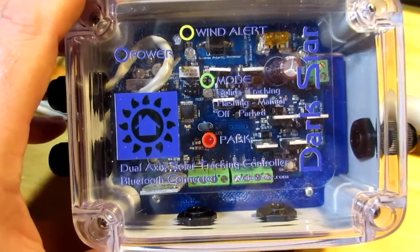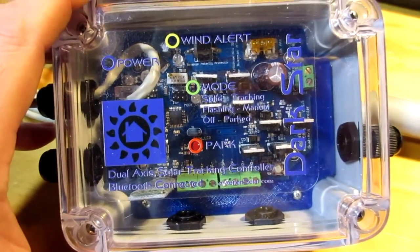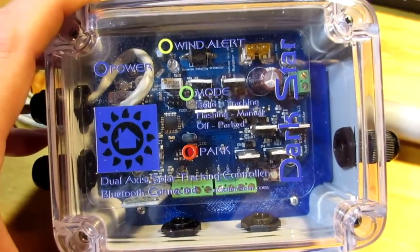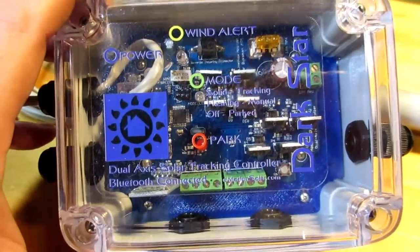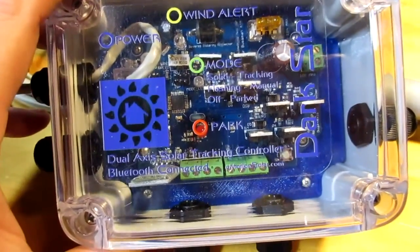There's a blue power LED power status indicator, yellow wind alert, green mode LED and a red park LED.